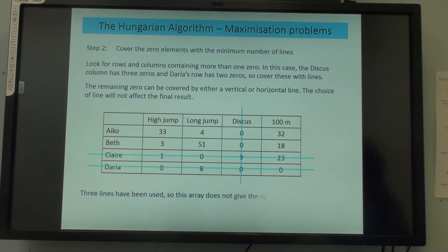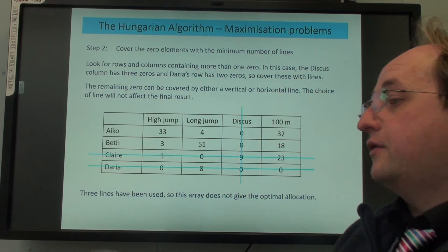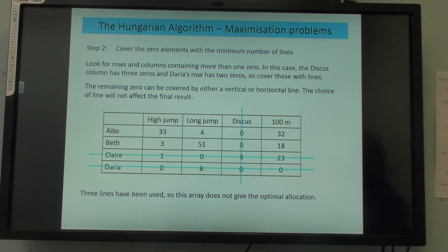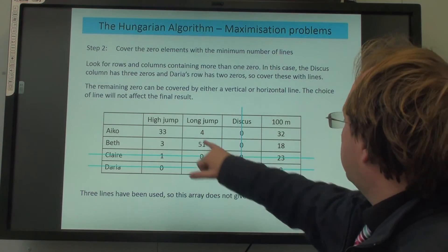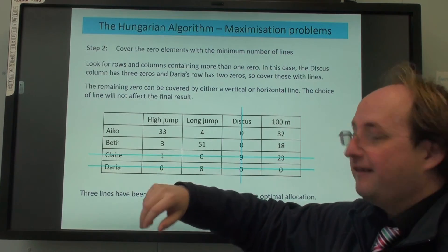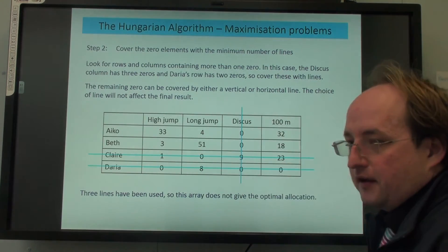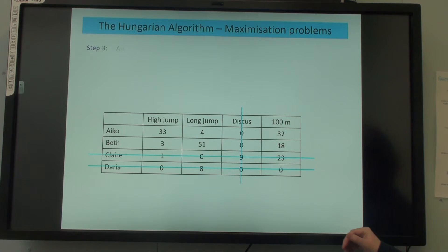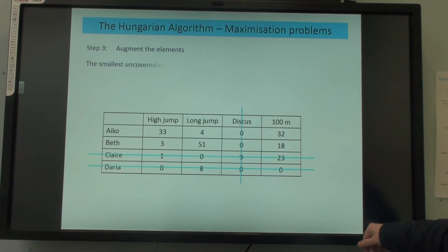Can you remember what the next step is? You subtract the smallest number from all the ones that aren't covered, and then add that number to the double cross ones. In this case, 3 is the smallest uncovered one, so I'm going to subtract 3 from all of these and I'm going to add 3 to there, 3 to there.